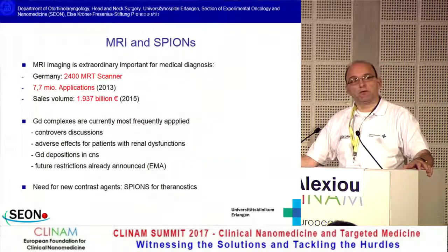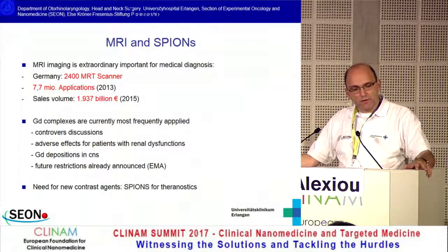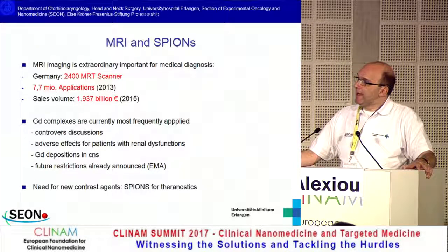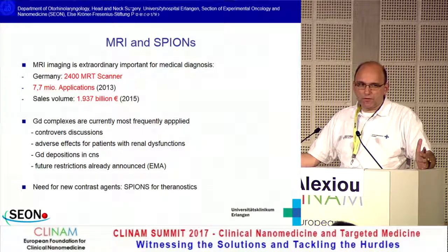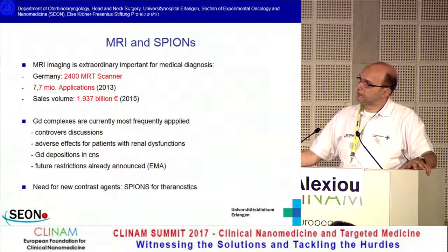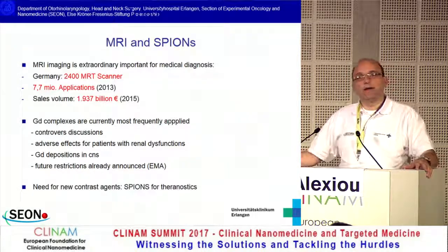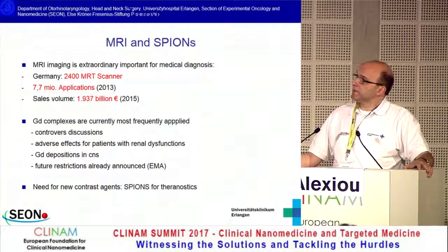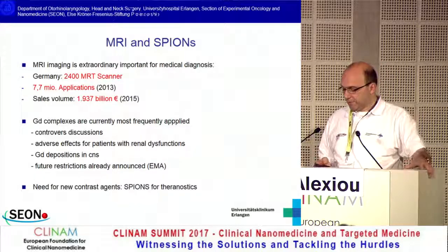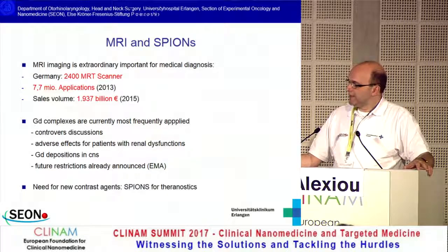The other part is MRI diagnostics with SPIONs — you can use SPIONs as a contrast agent. This is really important nowadays because the main contrast agent at the moment is gadolinium. The EMA in London declared that gadolinium might be suspicious for health problems due to its toxicity in some cases. Because of this, SPIONs can be a new option for contrast agents in MRI, and this is a huge market not only in Germany but all over the world.